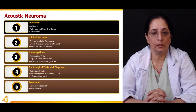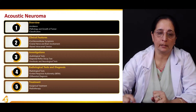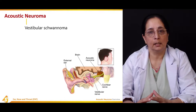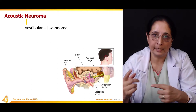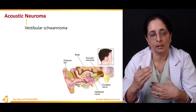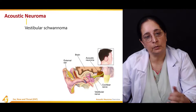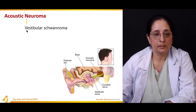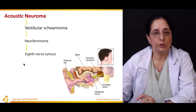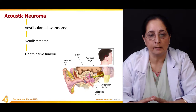Acoustic neuroma is also known as vestibular schwannoma. It develops from the Schwann cells, which are the cells that cover the nerves. Because it develops from Schwann cells, it is also known as vestibular schwannoma, and additionally as neurilemma.